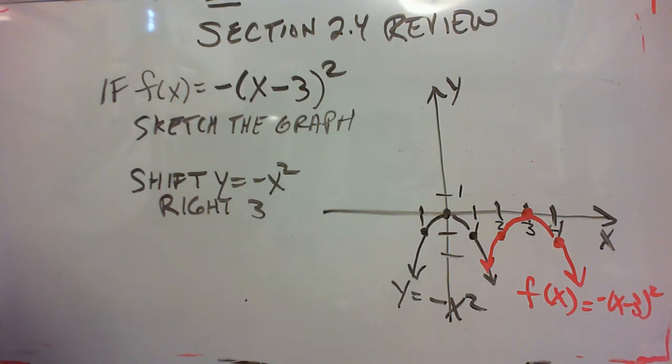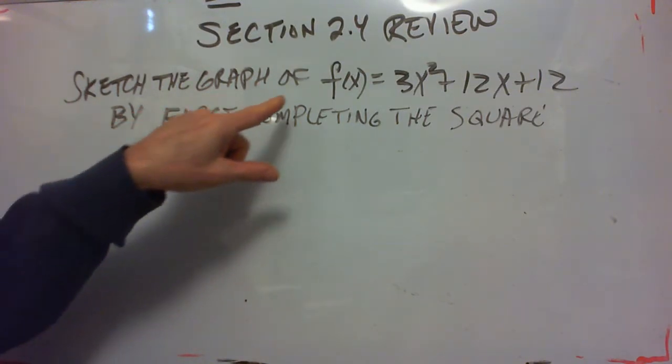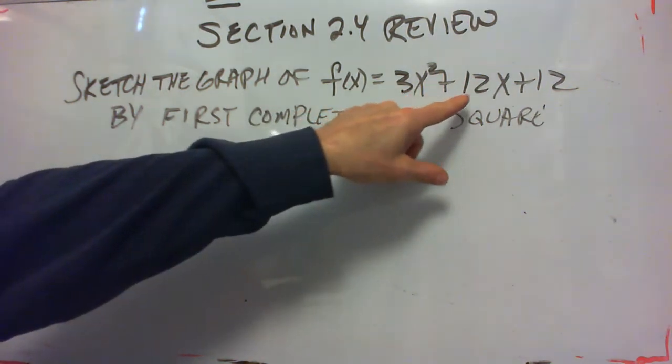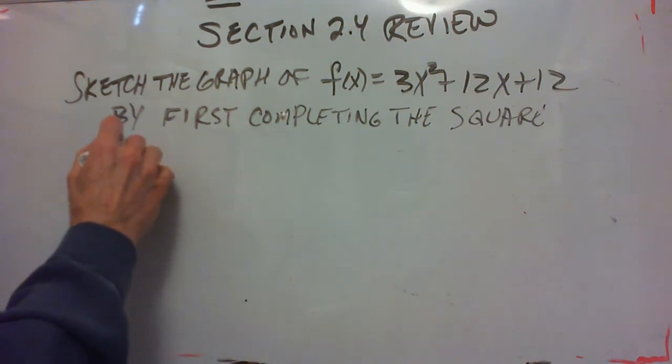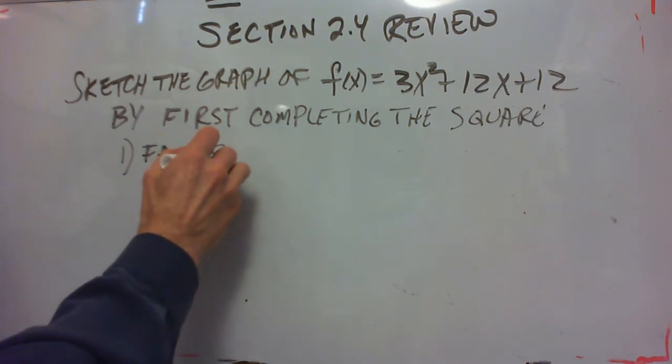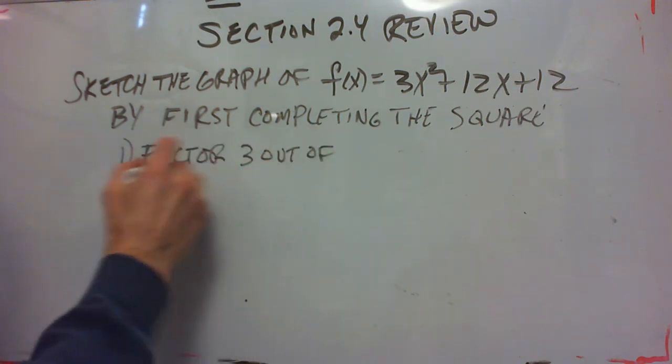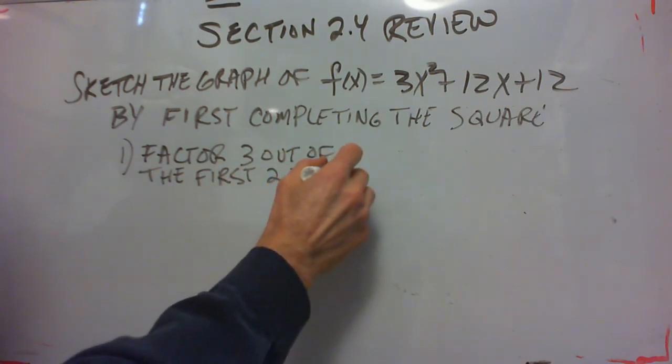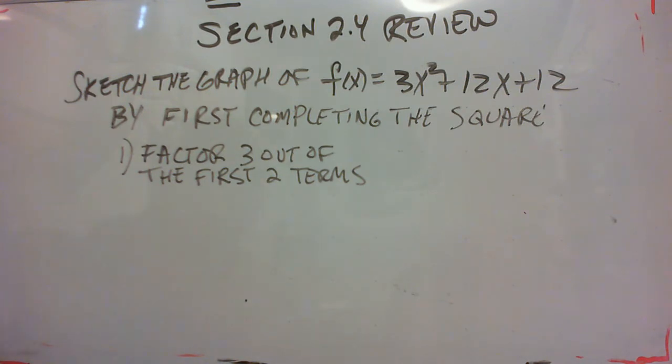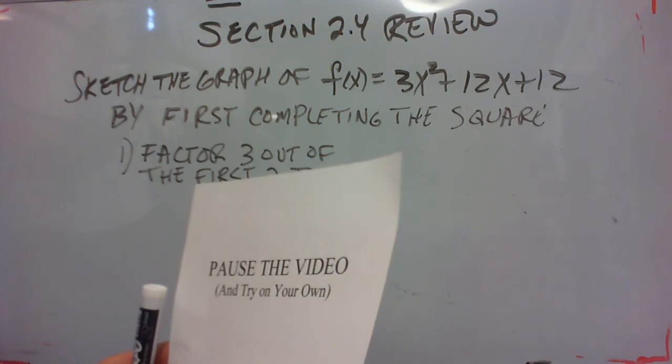Okay, now I'm going to give you a problem where we complete the square to write it in standard form. So here we're going to sketch the graph of f of x equals 3x squared plus 12x plus 12 by first completing the square to get this in standard form. And maybe what I'll do is have you, I'll guide you through the steps, have you pause the video and go to the next step. Your first step is factor 3 out of the first two terms. So why don't you try this, pause the video, do that step, and then we'll all continue on.